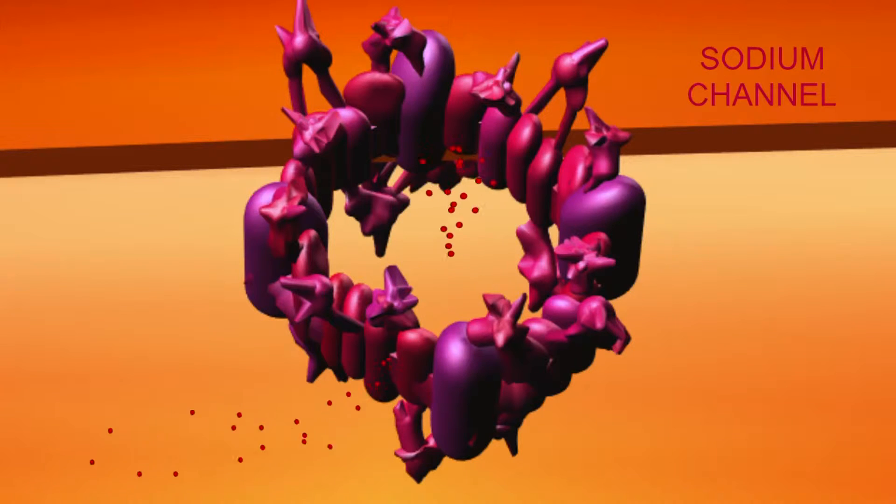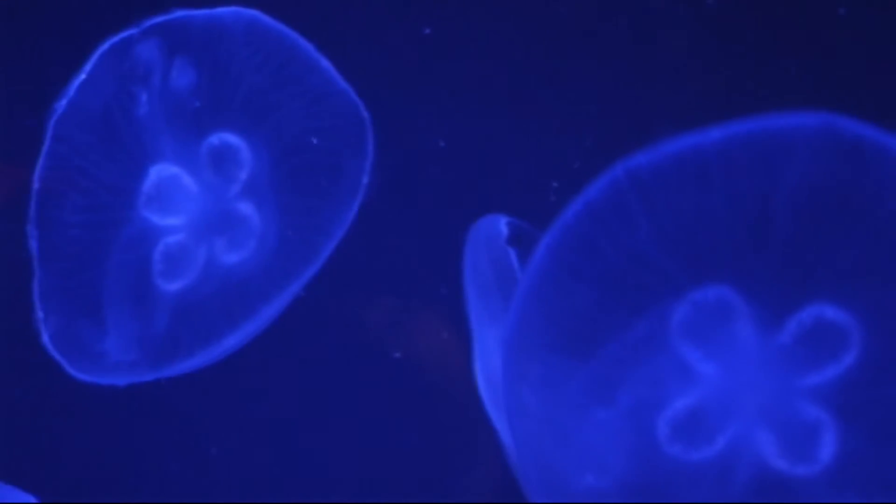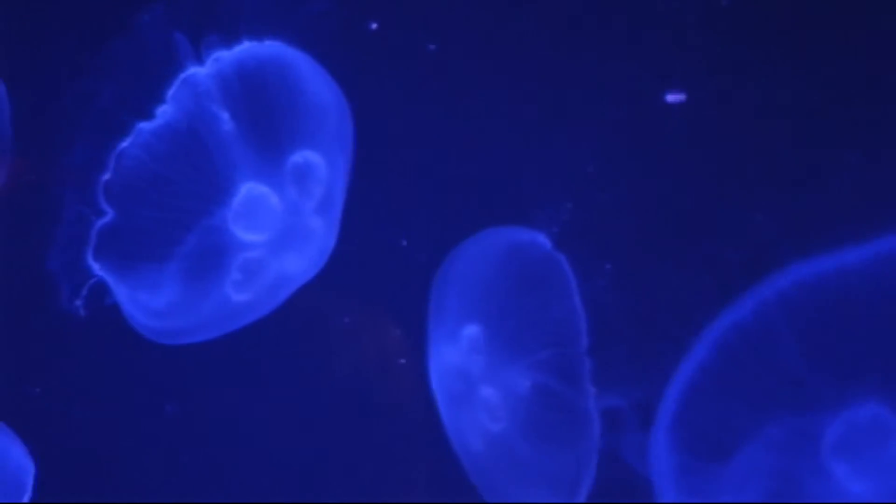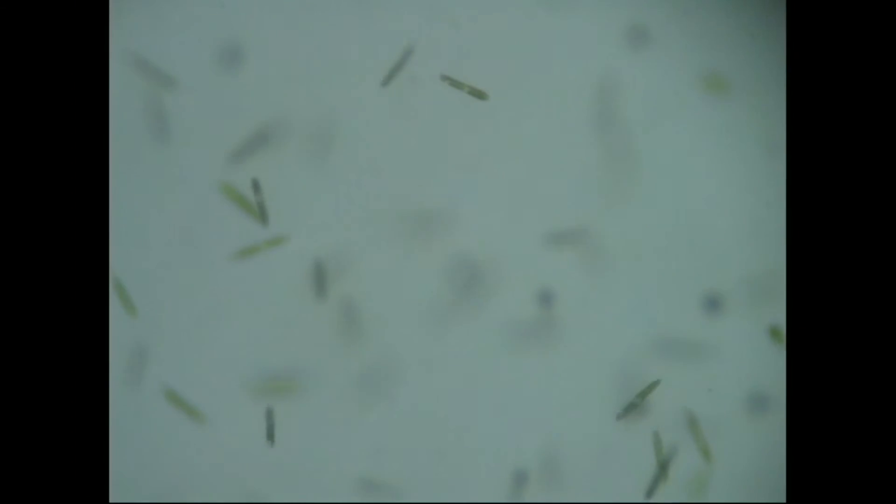If these excitable cells used calcium channels instead of sodium channels, it is possible that calcium levels inside the cell could accumulate to toxic levels, and so the metazoan animals would rely more on sodium channels compared to protists, which rely more on calcium channels.